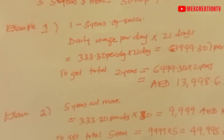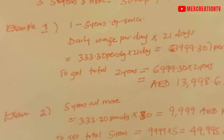To get the total gratuity after two years, you take 6,999.30 dirhams and multiply by the number of years — which is two. So 6,999.30 times 2 equals 13,998.60 dirhams. That means if this person resigns or completes their contract after two years, they will be getting 13,998.60 dirhams as their gratuity.